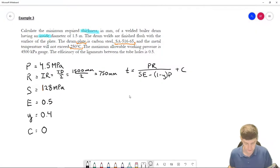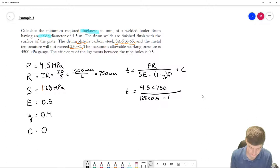Okay, at this point, what I'm doing is just going to be solving my problem. So T is going to be equal to P, so 4.5, times R, 750, divided by SE, so 128, times E, 0.5, minus 1 minus 0.4, times P, 4.5, plus C, which is 0.